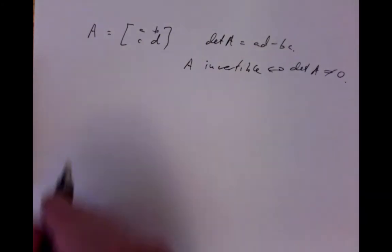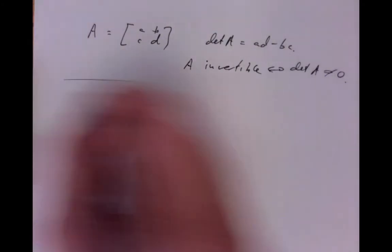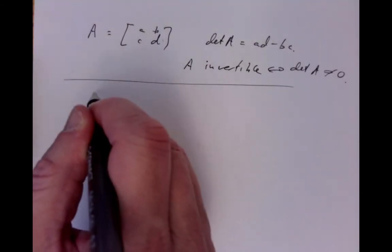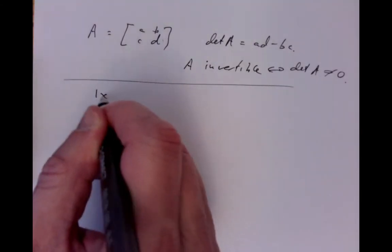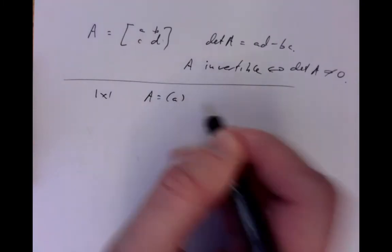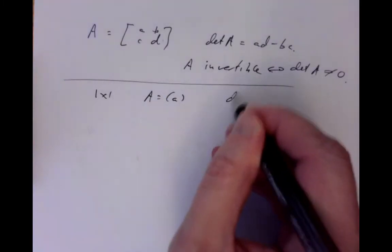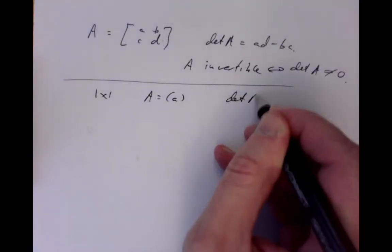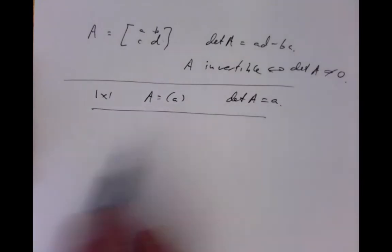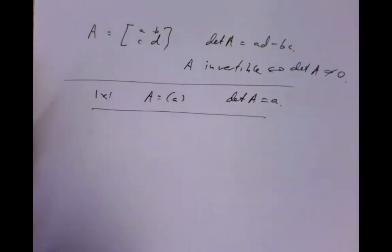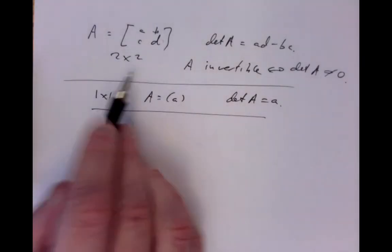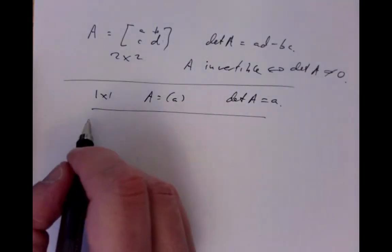If we have a 1x1 matrix, that's just a single number, and we can define the determinant of the matrix to just be that number itself. So for 1x1s we know how to do it, and for 2x2s we know how to do it. So what about larger matrices?